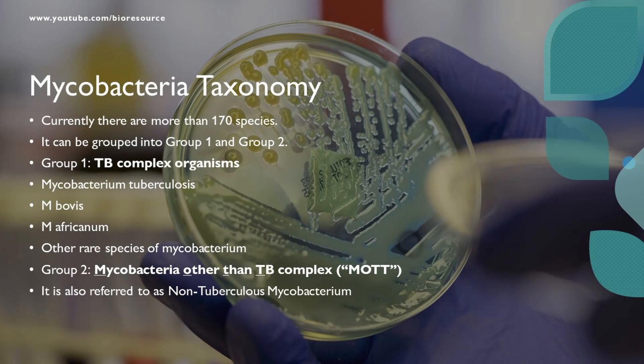Coming to the taxonomy, there are currently more than 170 species of Mycobacterium, grouped into two categories. Group 1 is the TB complex organisms, which include Mycobacterium tuberculosis, Mycobacterium bovis, Mycobacterium africanum, and other rare species. Group 2 includes Mycobacteria other than TB complex, also known as MOTT — referred to as non-tuberculosis Mycobacterium.